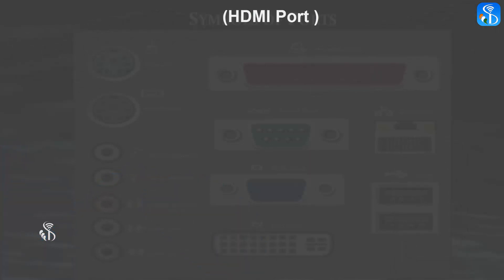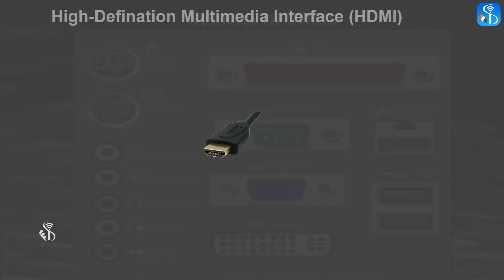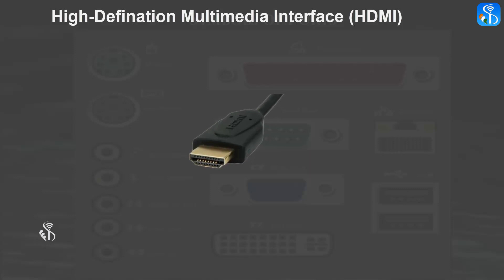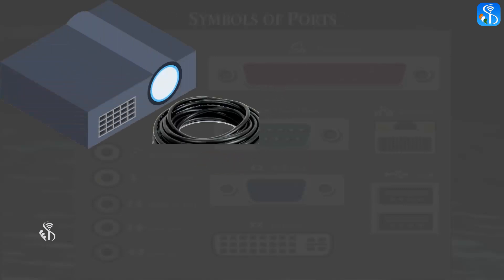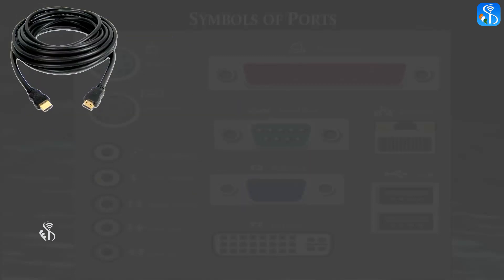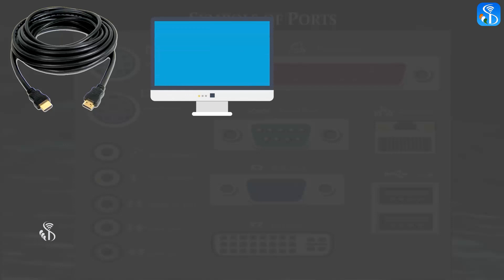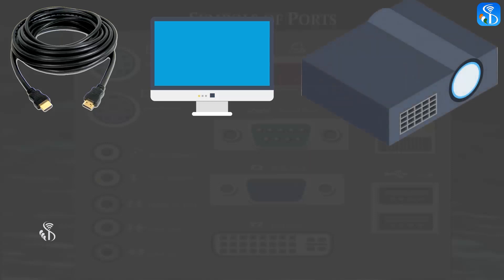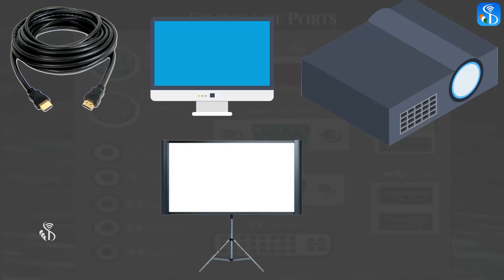4. HDMI Port: The full form of HDMI is High Definition Multimedia Interface. It is a digital audio-video interface. With the help of an HDMI port, we can transmit all the signals from one digital device to another digital device. For example, we can transmit the signal from a computer to a projector and see computer content on a big screen.